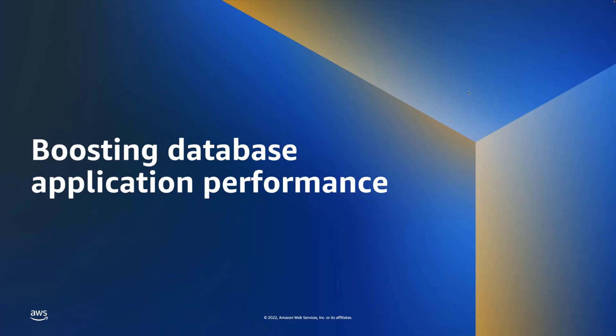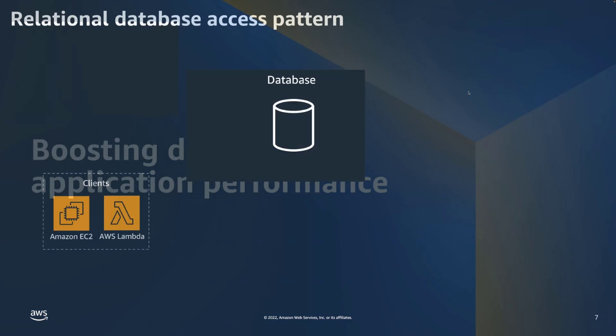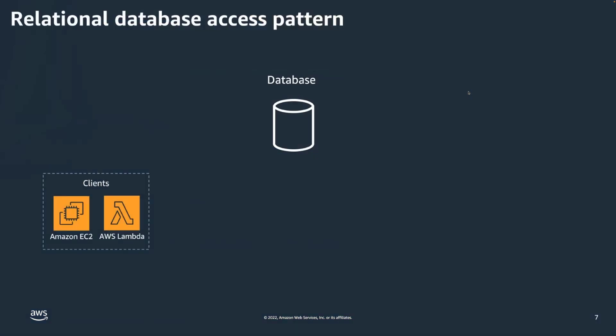Let's set the stage about how databases perform and scale, to give you context for the distributed cache mechanism and why it improves performance. If you take a standard relational database access pattern, you have your EC2 systems or Lambda clients — your compute systems — and they need data. Since they don't have data in memory, they go out and either write to the database or read from it. This is a standard approach that has existed ever since databases have been around.